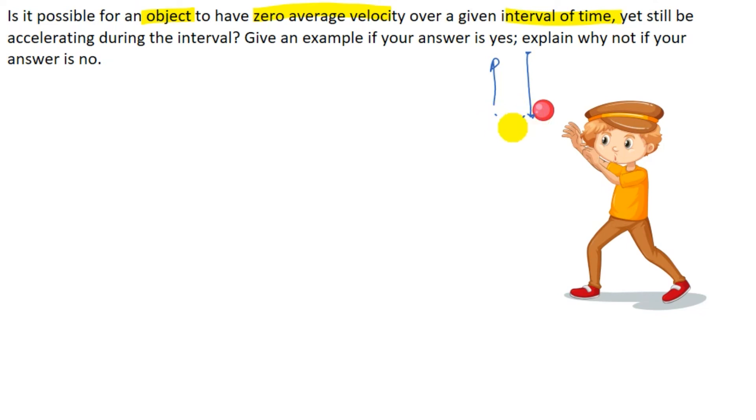Now for this motion if you see the average velocity this would be zero because the displacement is zero. But during that motion acceleration is always there which is in the downward direction with a magnitude 9.81 meter per second squared. So yes it is possible for an object to have zero average velocity over an interval of time yet still be accelerating during the interval. So the answer would be yes.